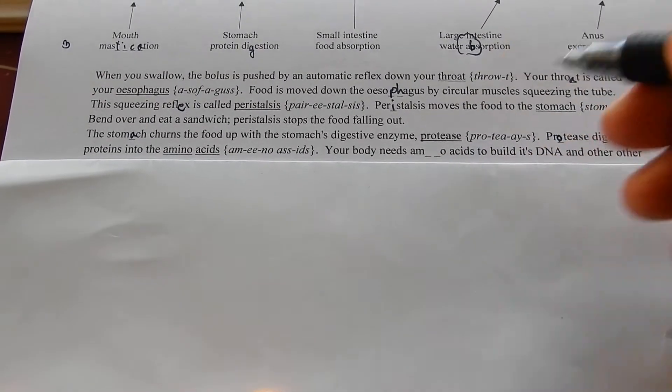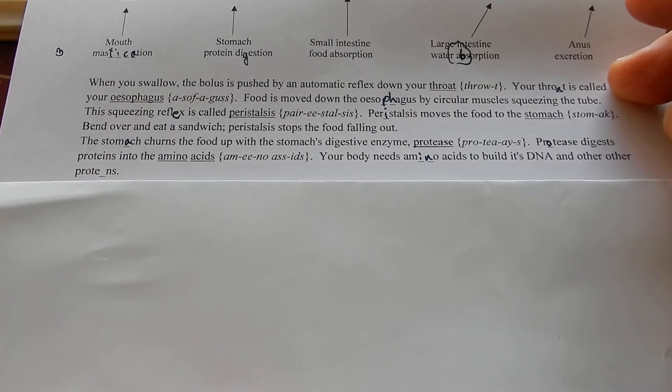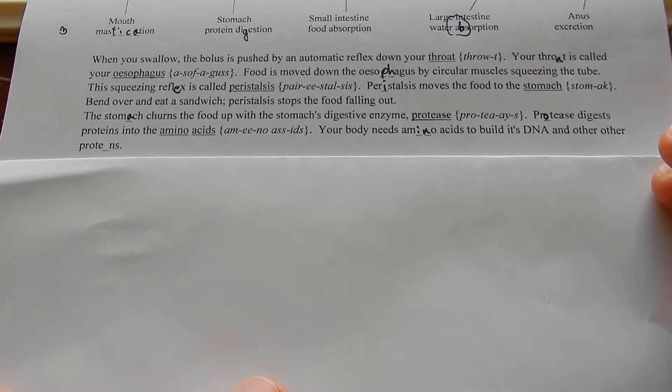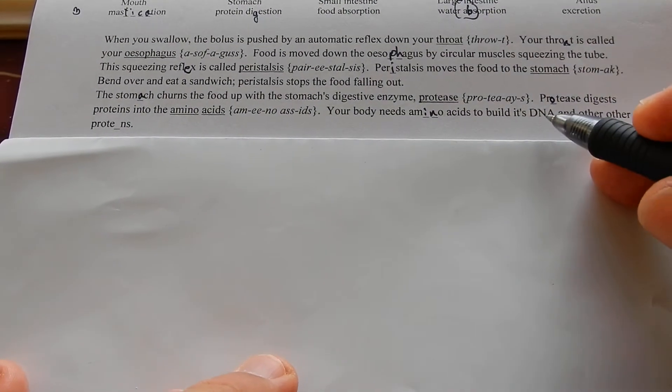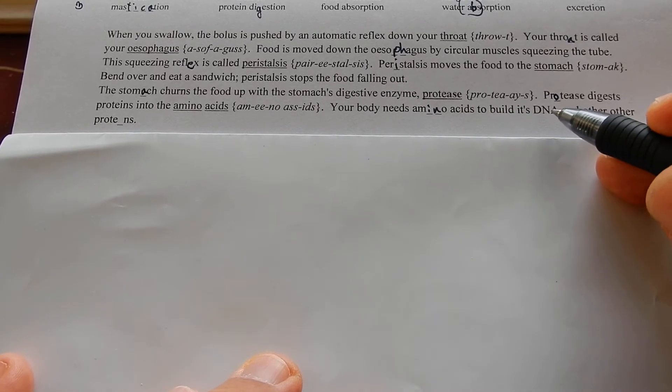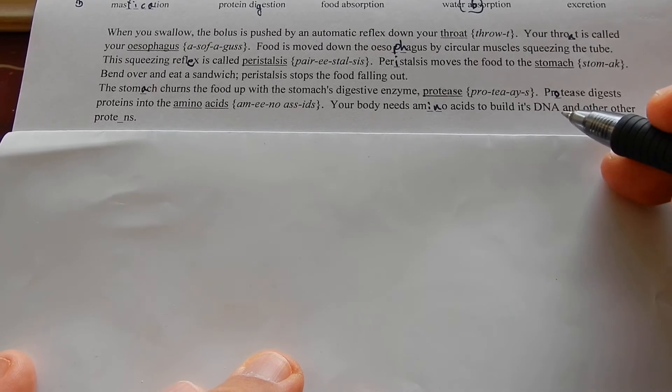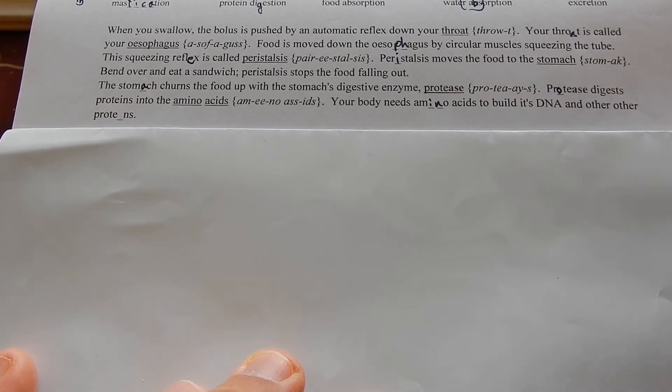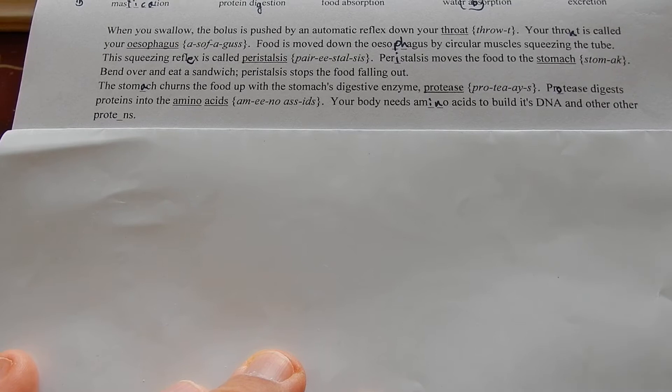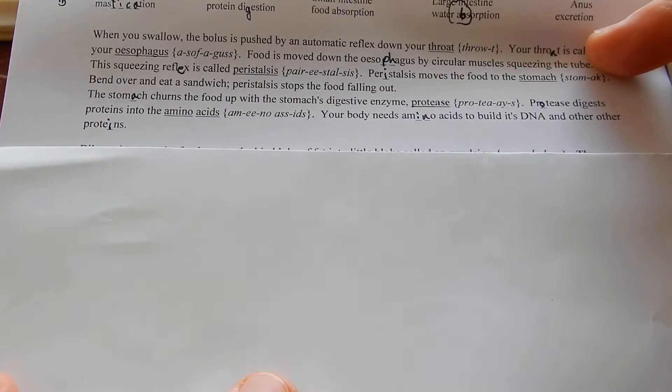Your body needs amino acids to build its DNA and other proteins. The DNA, the instructions in your DNA that you get from your mother and your father in the nucleus of every cell, apart from red blood cells. They're too small to hold a nucleus with DNA in it, and red blood cells don't last very long so it's not a problem.